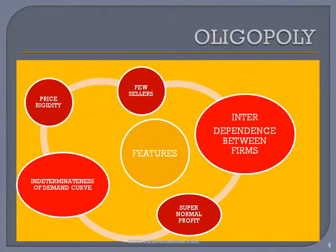The features of oligopoly are: interdependence between firms, supernormal profit, indeterminateness of the demand curve, and price rigidity. When the number of competitors is few, any change in price, any change in output, or any change in the product by a firm will have a direct effect on the fortune of its rivals. There is interdependence between firms.